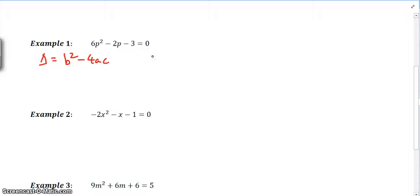And we're going to have a look at what is our a value. So a is 6, b is minus 2 and c is equal to minus 3.